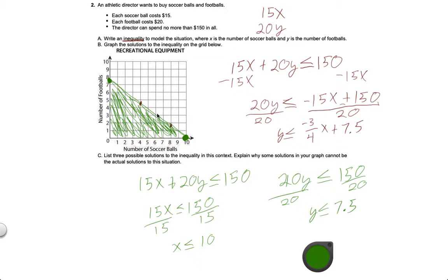Now, part C - so this is what your graph should look like. But part C says list three possible solutions to the inequality in this context and explain why some solutions in your graph cannot be actual solutions to the situation. So, according to this inequality, we can buy any point in here. I'll use a different color so you can see it. Maybe blue. Any point in here, and any point on the line as well. There's just not as many of those. So, if I buy one soccer ball, I can buy five footballs.